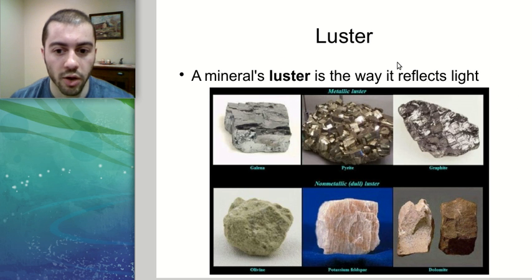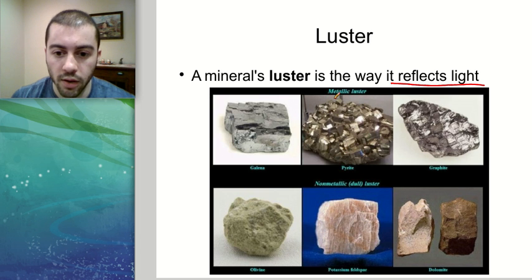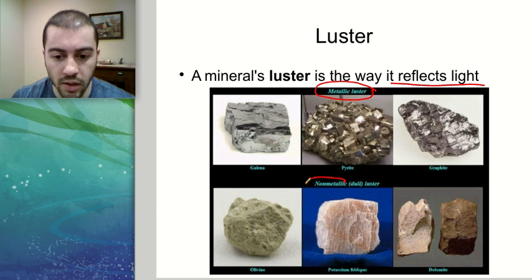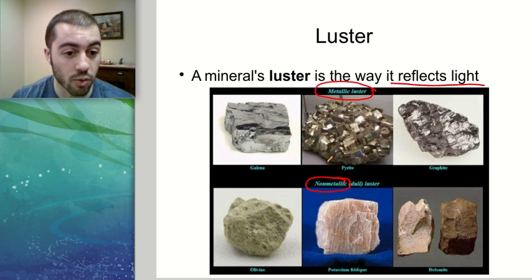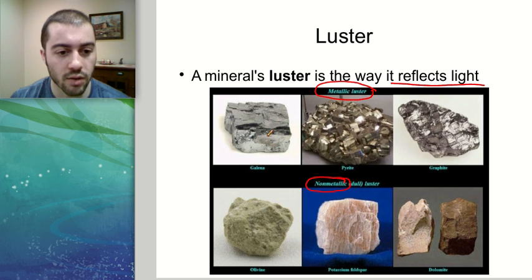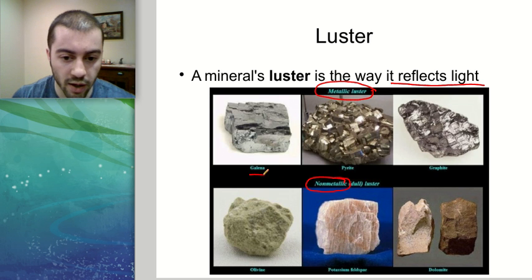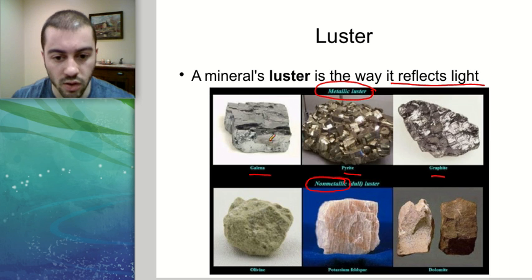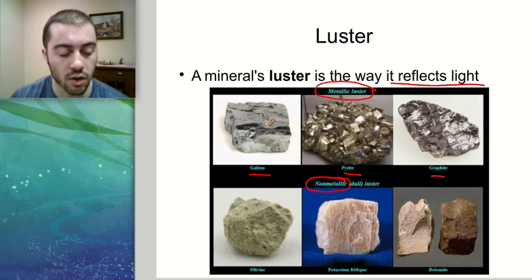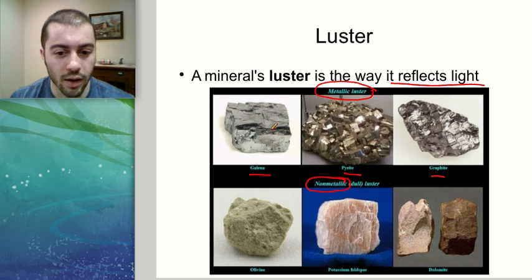The next characteristic is luster — how the mineral reflects light. The biggest distinguishing factor is whether it has a metallic or non-metallic luster. Metallic means it looks like a metal: it has a reflective, shiny surface. Minerals like galena, pyrite, and graphite all have metallic lusters. They reflect the light and look shiny, similar to what you'd expect from aluminum foil.